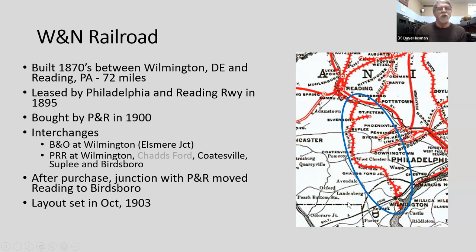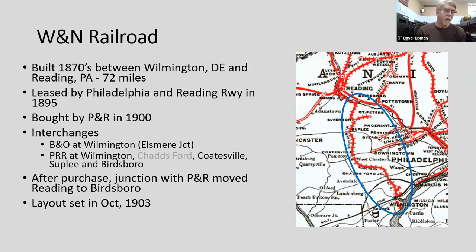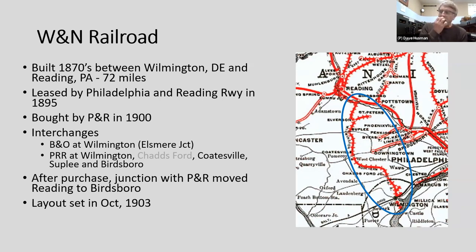After the purchase, the junction between the P&R and the Wilmington Northern moved from Reading down to Birdsboro. Wilmington and Northern freight trains terminated at Birdsboro, with cars picked up by P&R through freight, and vice versa. The portion between Birdsboro and Reading became the Beltline, used as a bypass around Reading — still used by Norfolk Southern today. Dave's layout is set in October 1903, right after the merger and operational changes.